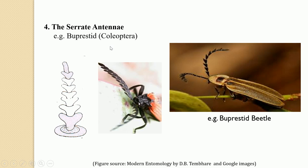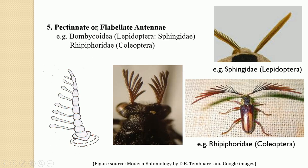The next type is the pectinate antennae, also referred to as the flabellate antennae. In this type, the individual segments of the flagellum have exceedingly long processes on only one side, thus the antennae becomes comb-like. The flagellar segments have an extension on just one side, and due to this one-sided appearance the whole antennae looks like a comb. This pectinate antennae is very common among lepidopteran insects belonging to the family Sphingidae and Bombycoidea, and the coleopteran family Rhipiphoridae also shows a pectinate or flabellate antennae.